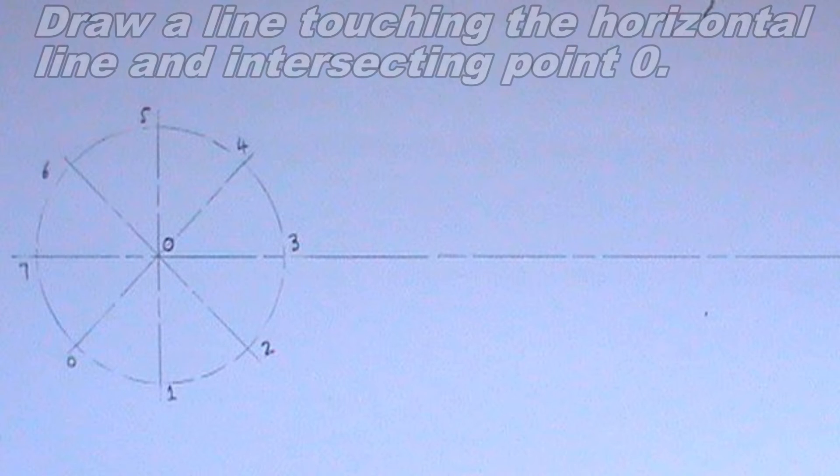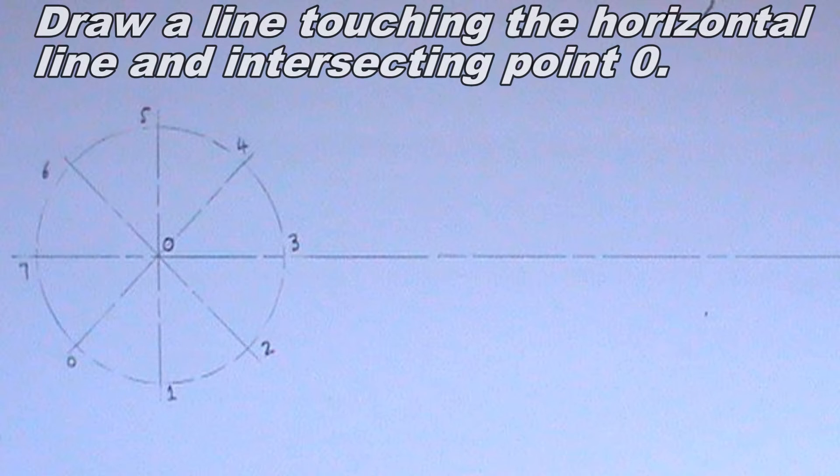I will draw a line of length 115 mm. The line should touch the horizontal line and should intersect point 0 such that the end of the line will be 20 mm from point 0. The line should be a thick continuous line.